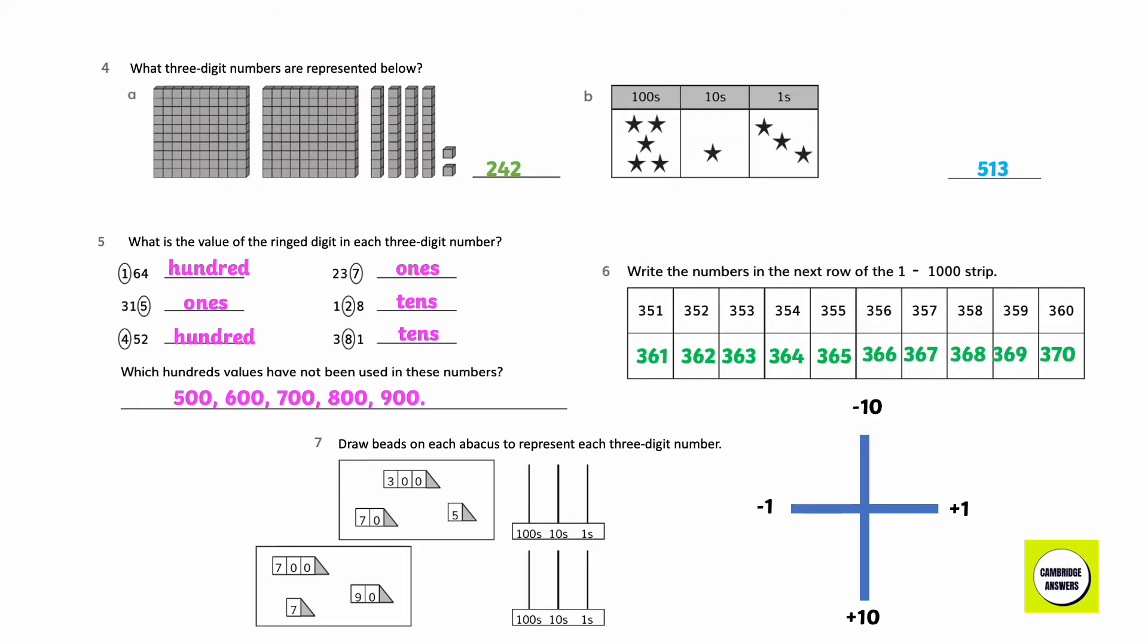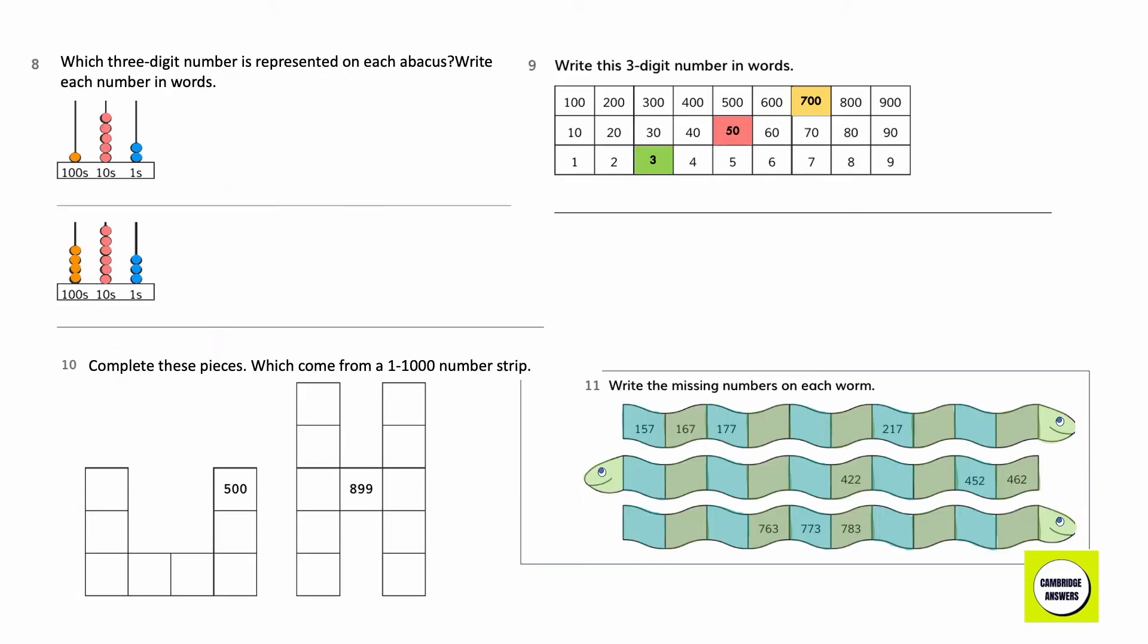Draw beads on each abacus to represent the 3-digit number: 300, 7 tens, 5 ones; 7 hundreds, 9 tens, 7 ones. Which 3-digit number is being represented on each abacus? Write each number in words. There is 100, 5 tens, and 2 ones: 152, 463.